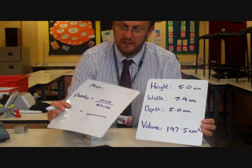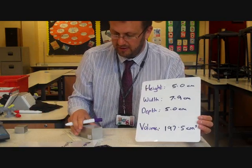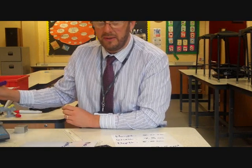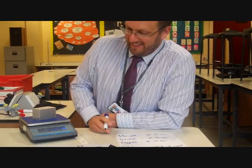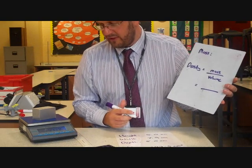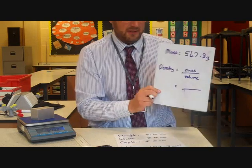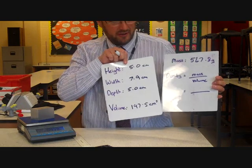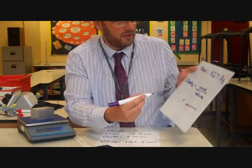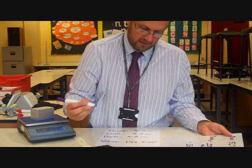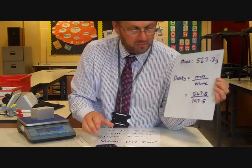You should know from your lessons that the formula for density is: density equals mass divided by volume. We haven't got the mass yet, so over here I've got a top pan balance and I'm going to put the block onto it. Let that settle — this is 547.8 grams. So we've got the volume as 197.5 cm³ and the mass as 547.8 grams, giving us density equals 547.8 divided by 197.5.